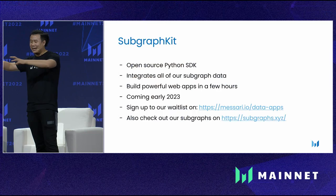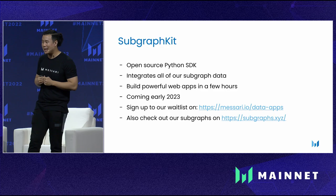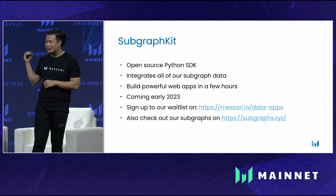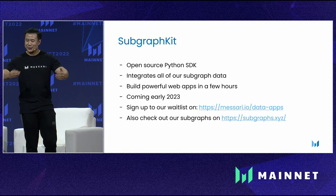What's really cool about these data apps is that all of them are powered by our subgraphs, which means you don't need a back-end and you don't even need a database — you're using the Graph as your decentralized data provider. We are working very hard on taking the core building blocks of these data apps into an open source Python SDK called SubgraphKit, which we'll be opening to the public early next year. You can sign up to our waiting list if you're interested, or come over to our booth for a sneak peek.